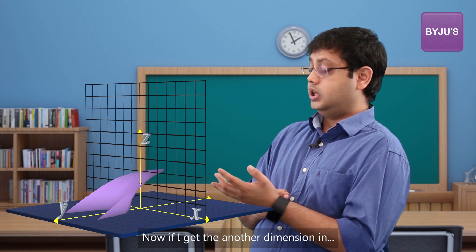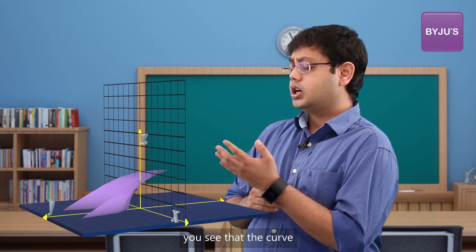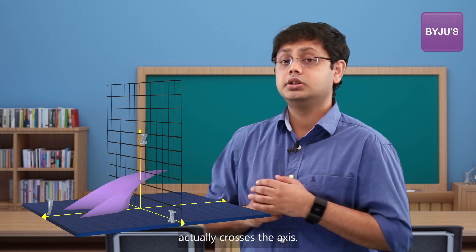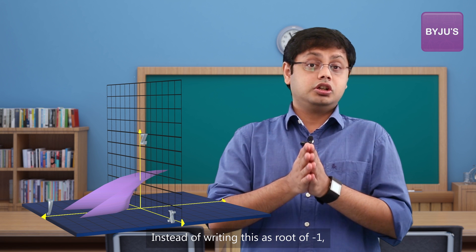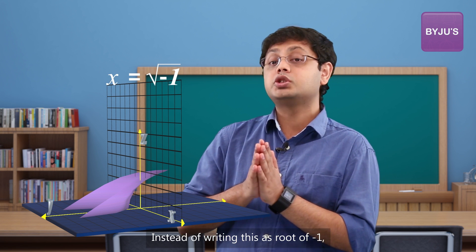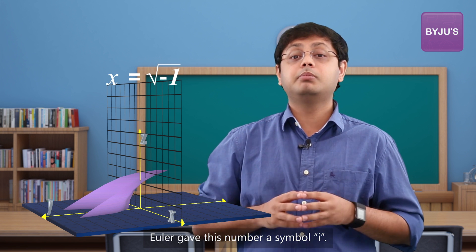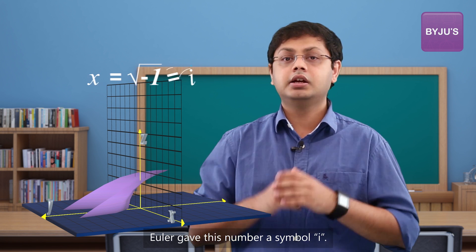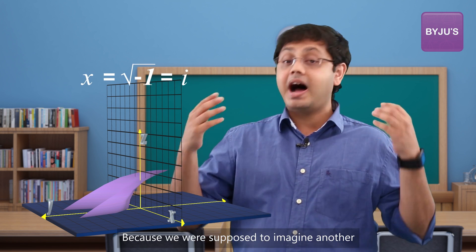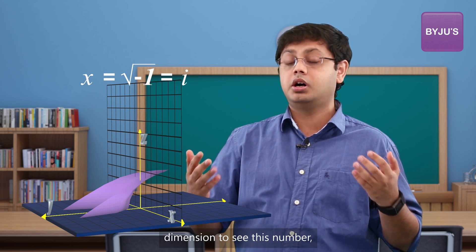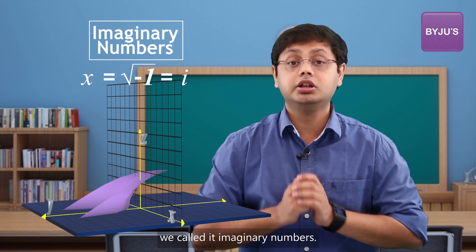Now if I get the other dimension in, you see that the curve actually crosses the axis. Instead of writing this as root of minus one, Euler gave this number a symbol: i. Because we were supposed to imagine another dimension to see this number, we called it imaginary numbers.